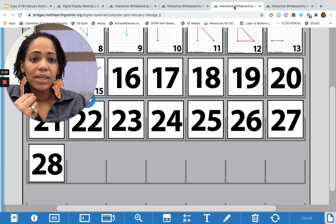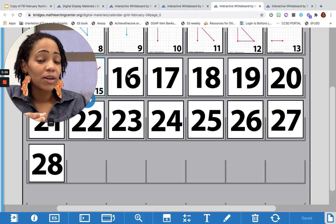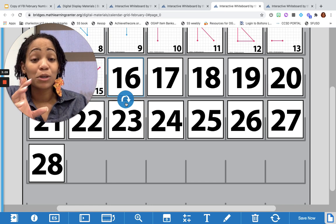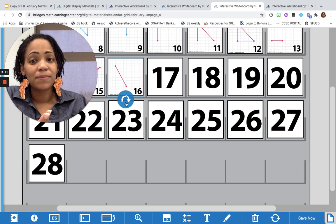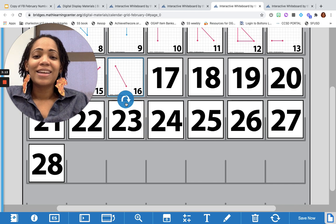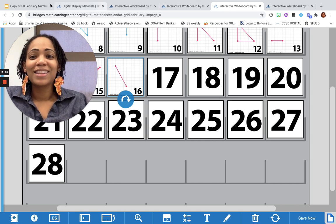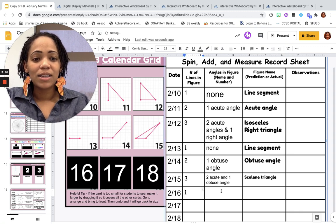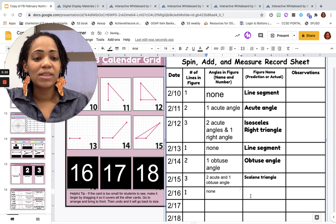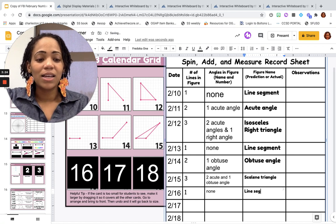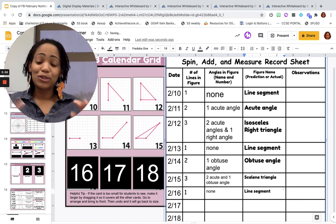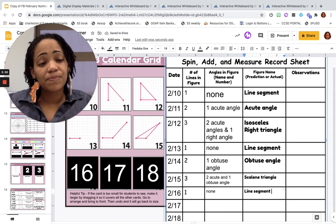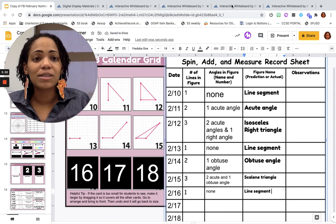So that makes me wonder, what is today's calendar marker gonna look like? Let's see. I'm thinking it's just gonna be one line segment, and it is. So I'm gonna fill that in: one, we have no angles, and it is just a line segment. So it seems to me that we do have a pattern going, and maybe we're just looking at the different types of triangles.